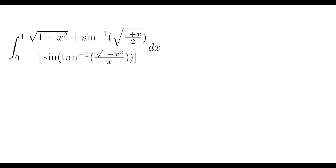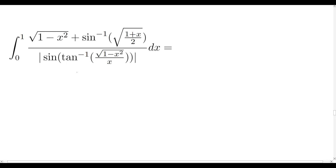The first thing we note is that this looks like an absolutely terrible integral to tackle — and you would be correct. What we can do first is see what we can simplify. Square root of 1 minus x squared, probably not going to work there. Maybe 1 plus x on 2 — maybe not. The place we're going to start is actually in our denominator, with that inverse tan function.